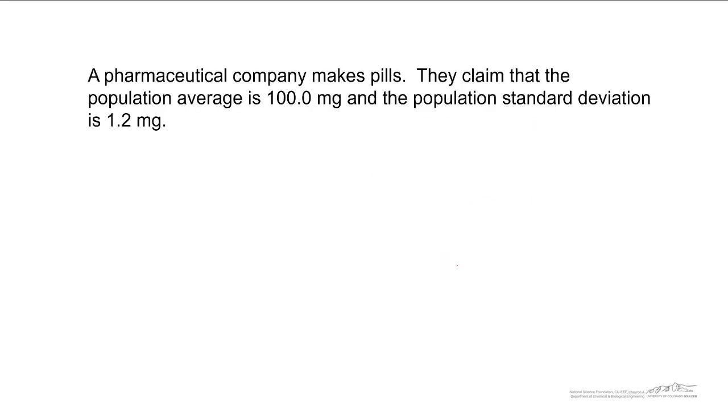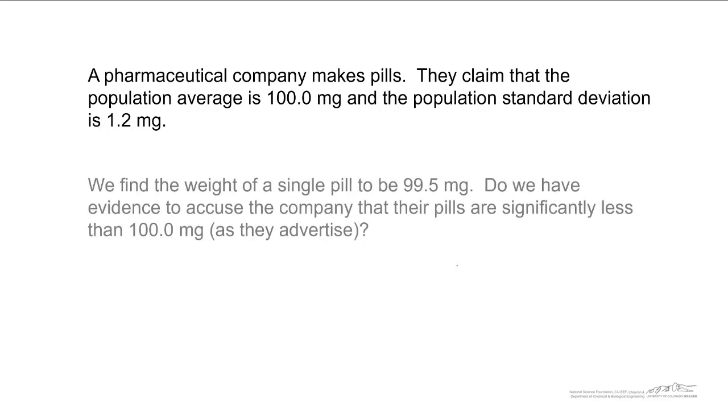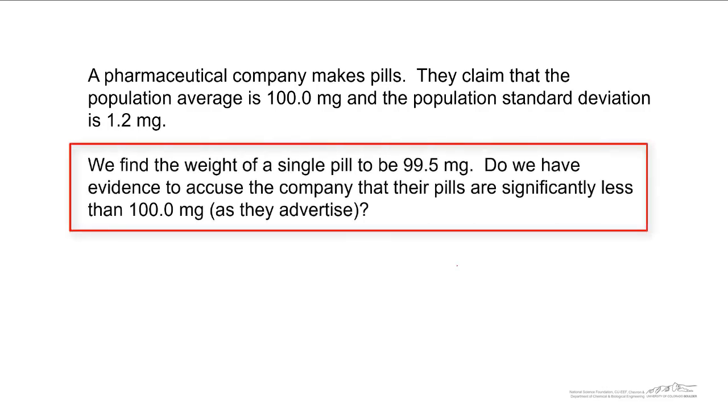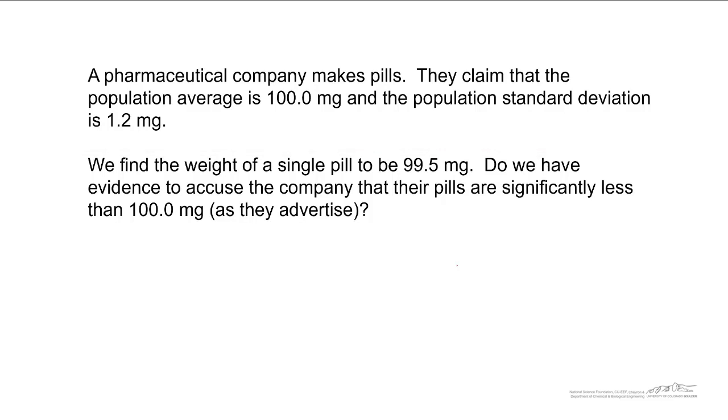Let's take a look at an example. A pharmaceutical company makes pills. They claim that the population average is 100 milligrams, and the population standard deviation of these pills is 1.2. We find, so we just go and we weigh one single pill, and it's 99.5 milligrams. Is this rare? Do we have evidence to accuse the company that their pills are significantly less than 100 milligrams as they advertise? Because we found a pill that's 99.5 milligrams.